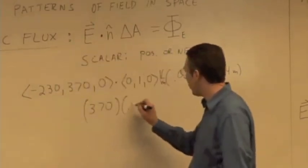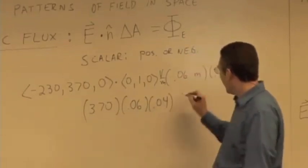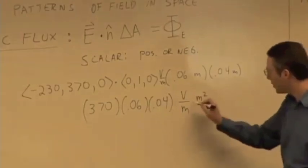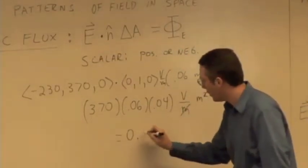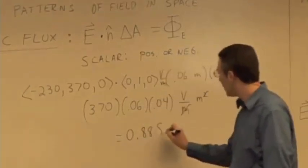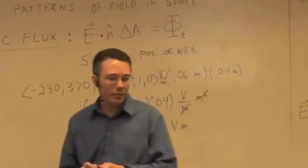We get 370 times 0.06 times 0.04, and the units are volts per meter times meters squared, which just gives us volts times meters, and that should work out to be 0.888 volts times meters for electric flux. No trouble there?